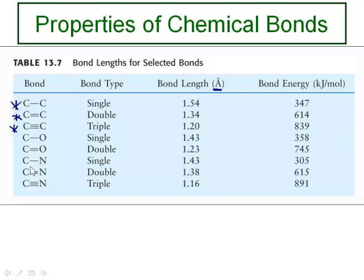Here's a question: the carbon-nitrogen single bond is 1.43 angstroms long, while the carbon-carbon single bond is 1.54 angstroms long. Why is the C-C bond longer? Both are single bonds. The difference is the element involved. We said bond length depends on bond order and also the size of the atom. Nitrogen is smaller than carbon — further to the right on the periodic table means more protons, which pulls electrons in closer. So the distance between the two nuclei in a C-N bond is shorter than in a C-C bond.